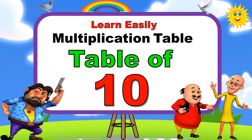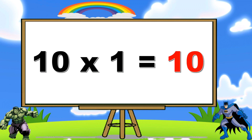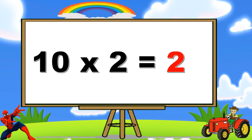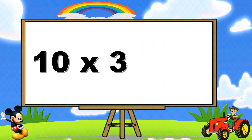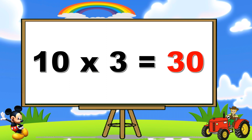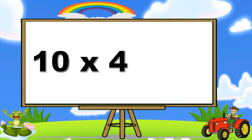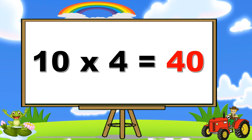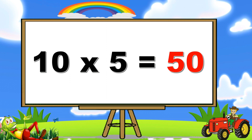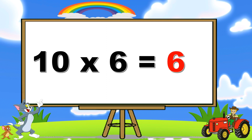Table of Ten. Ten one's are ten. Ten two's are twenty. Ten three's are thirty. Ten four's are forty. Ten five's are fifty. Ten six's are sixty.